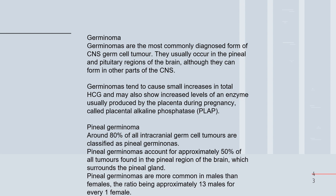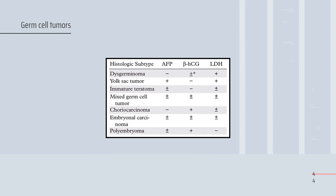Pineal germinomas account for around 80 percent of all intracranial germ cell tumors. Systemically, germinoma may be associated with elevated beta-hCG and LDH. Mature teratoma may show elevated alpha-fetoprotein and LDH, while other germ cell tumors show elevation of alpha-fetoprotein, beta-hCG, and LDH.